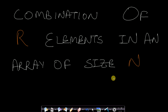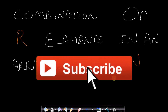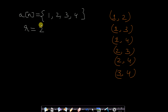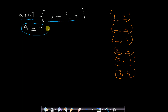Hello guys, welcome back to TakeDose. In this video we will see how to print all possible combinations of r elements in a given array of size n. The problem statement says that if you have an array of size n — here the size is 4 with elements 1, 2, 3, 4 — and your r value is 2, that means you want to print all the possible combinations of size 2.